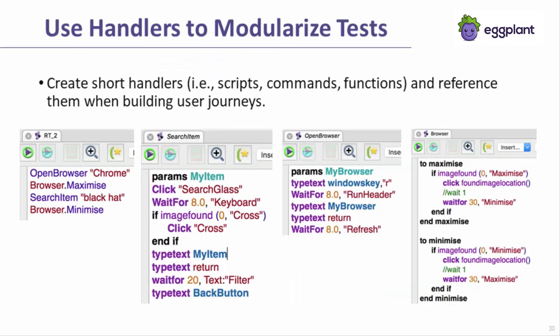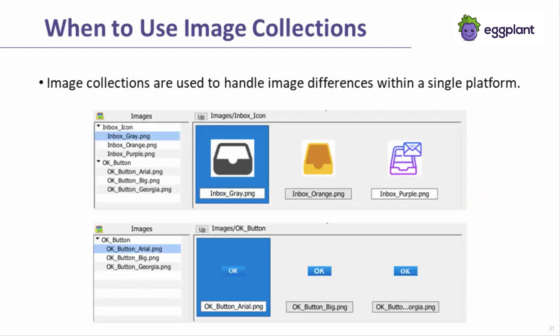Here are some examples showing how one might modularize code into short, focused, reusable handlers. The code on the far left contains references to reusable scripts and generic handlers. SearchItem is a parameterized script that might be used across various platforms, devices, and test cases that require searching for something. OpenBrowser is a script handler unique to the Windows platform but could be used to open various web browsers on Windows. Maximize and minimize are two handlers written in generic form. Note how each handler performs a very specific function within an overall workflow.